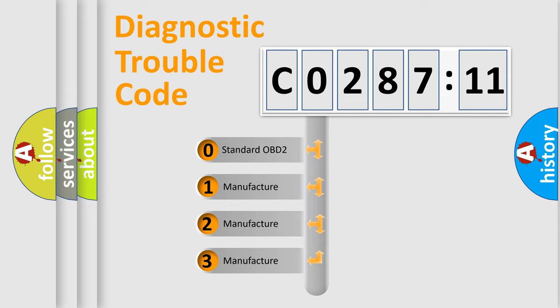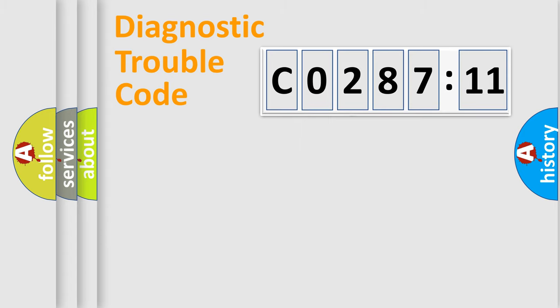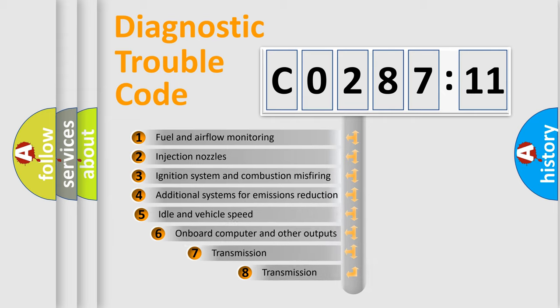If the second character is expressed as zero, it is a standardized error. In the case of numbers 1, 2, 3, it is a more prestigious expression of the car-specific error.